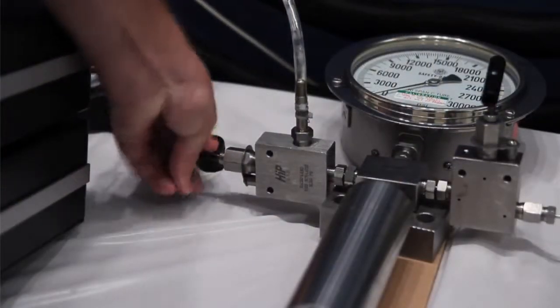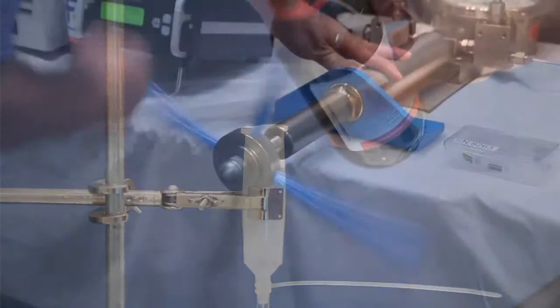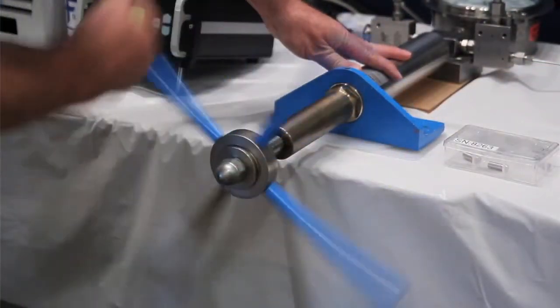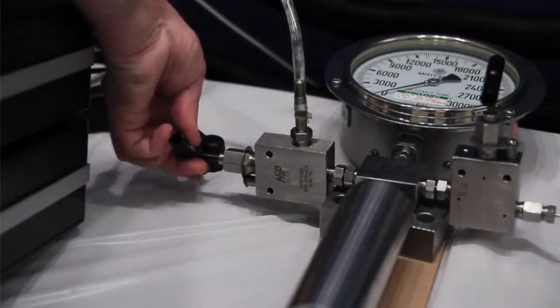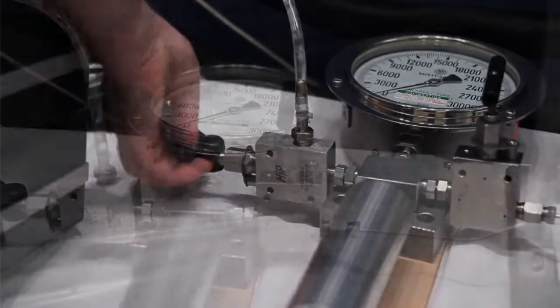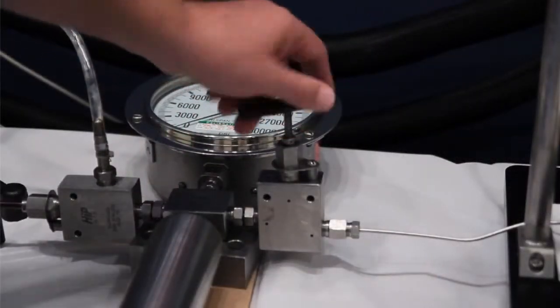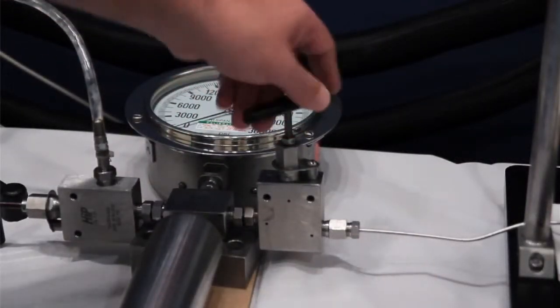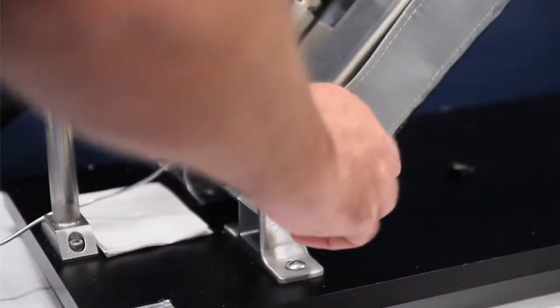Open the valve to the reservoir and draw a traceable calibration standard into the pump. Close the reservoir valve and open the reservoir inlet valve. Open the sample inlet valve.